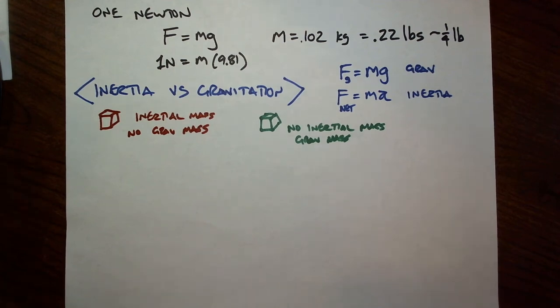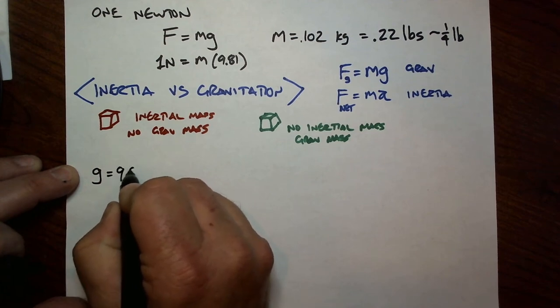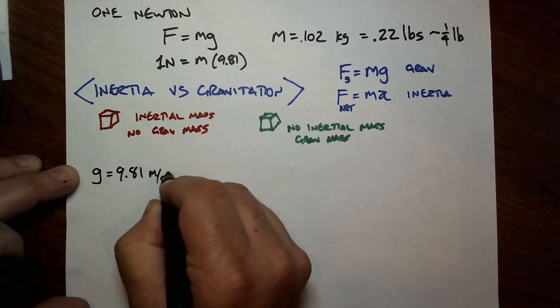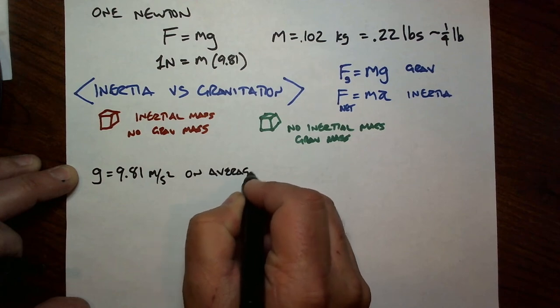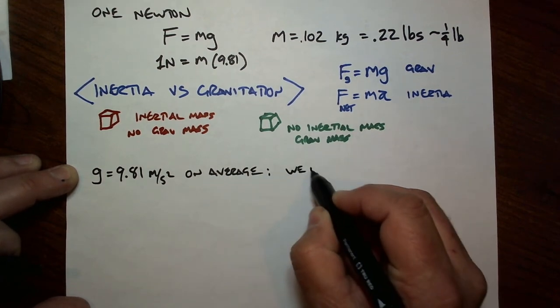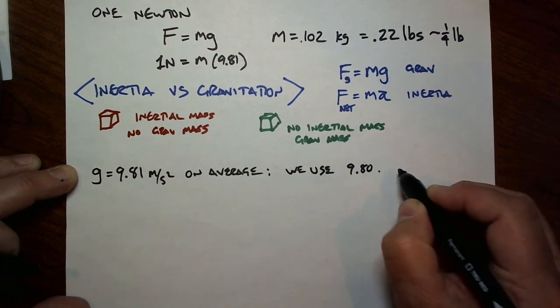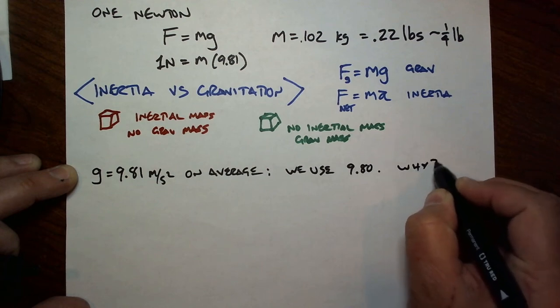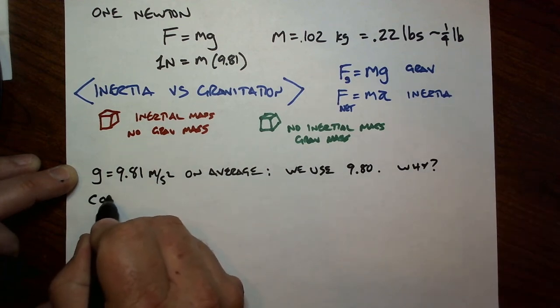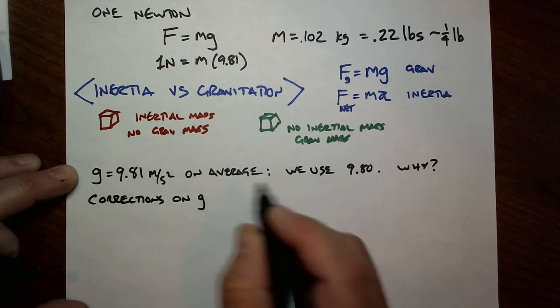Okay, I'm going to cut this video off here. But I will tell you what's coming. What's coming is that G, we're going to investigate the fact that g equals 9.81 meters per second squared on average. But we use 9.80. Why?